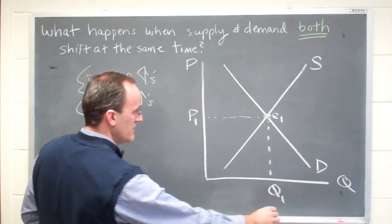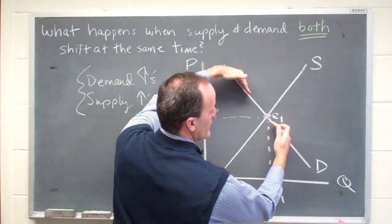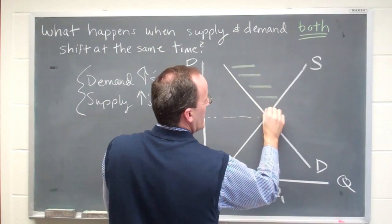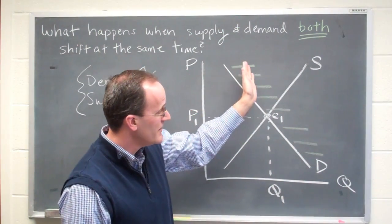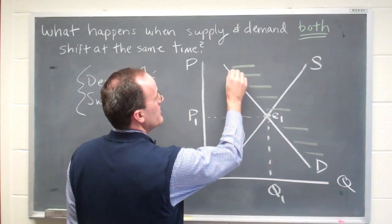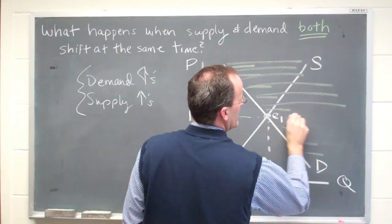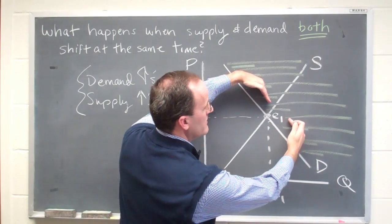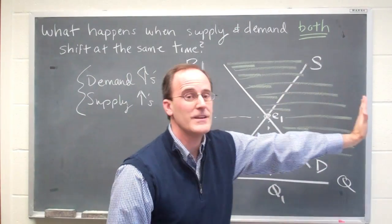Let's begin with demand. We're told that demand increases, so the demand curve is going to shift out. I'm not actually drawing a new demand curve because all we know is that demand increases — the demand curve could move anywhere in this direction. It could shift out a small amount or a big amount. We don't know exactly how much, so we just know it shifts out.